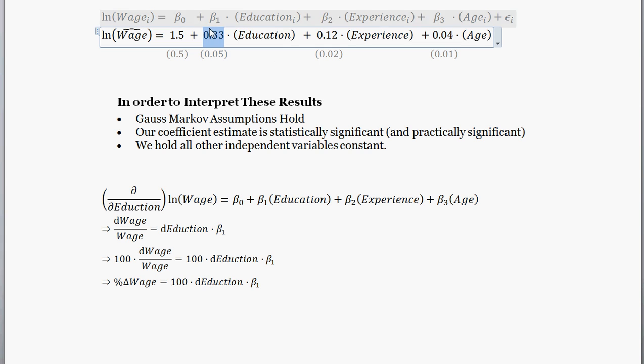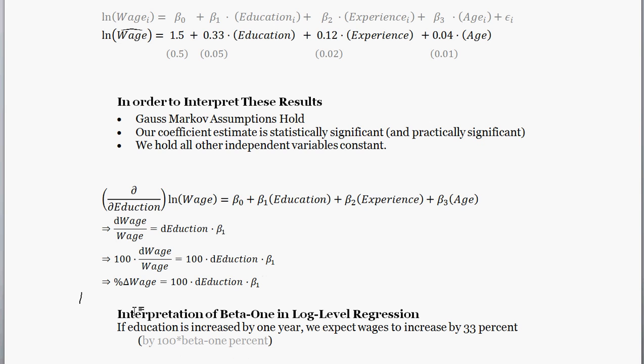So beta one equal to 0.33 here, that means that if education were increased by one unit, so that's one year, education increases in units of years, we expect wages to increase by 33 percent. So to correctly interpret this, we need to be aware of a couple things. First of all, we need to be aware of what the units are of changes in education. And then we also need to know obviously what beta one is. So what this says again is that a one year increase in education, we expect to increase wages by 33 percent.